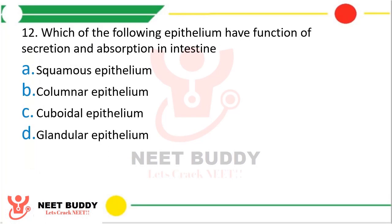Question number twelve: Which of the following epithelium has the function of secretion and absorption in the intestine? Option A, squamous epithelium; option B, columnar epithelium; option C, cuboidal epithelium; option D, glandular epithelium. The correct answer is option B, that is columnar epithelium.